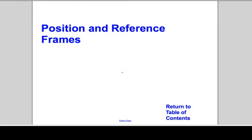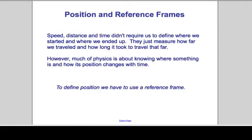Position and reference frames. Speed, distance, and time didn't require us to define where we started or where we ended up. They were just absolute changes. They just measured how far we traveled and how long it took to get there.